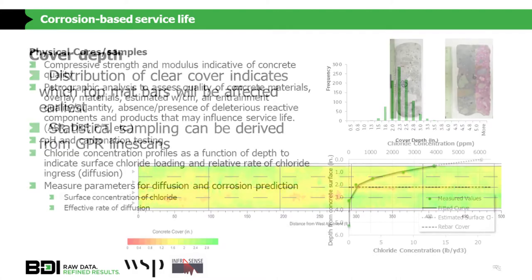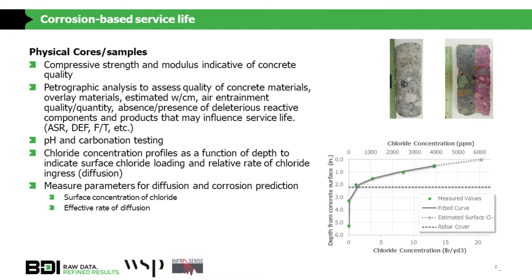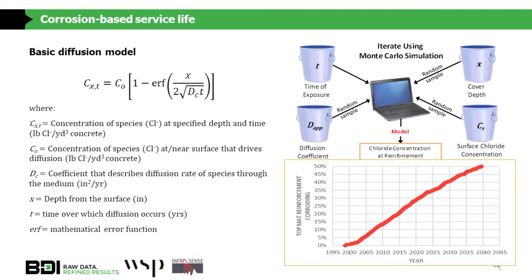We went through and did coring, took complete petrography — identifying pH and carbonation. What we were trying to identify for the modeling portion was chloride concentration as a function of depth. Through GPR we knew our rebar level. Through multiple coring and powder samples, we knew the chloride concentration as a function of depth. We then ran a diffusion modeling process — essentially a Monte Carlo simulation — inputting all that information to identify at what percentage and at what year we would have certain chloride concentrations at the top mat level. Using all of that, we come up with a coefficient of corrosion, giving us one last piece of the puzzle.